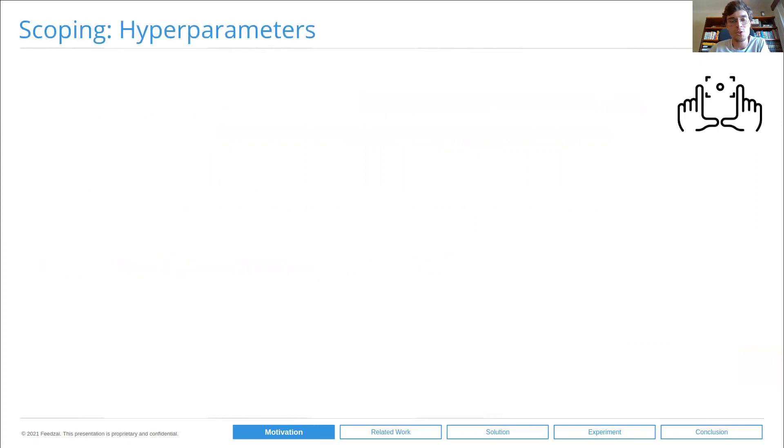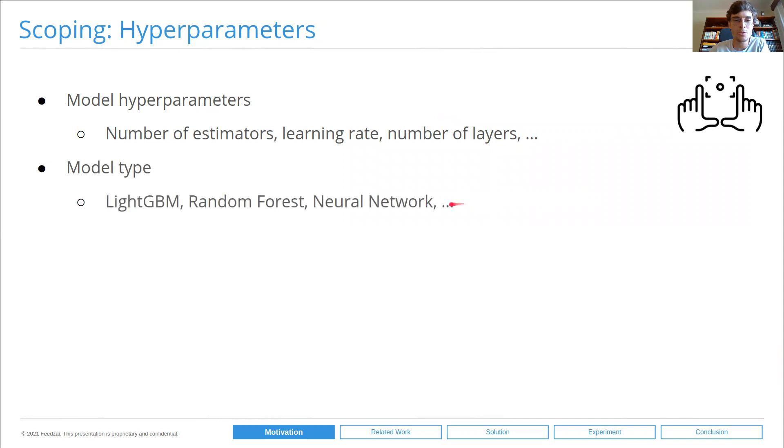Let's take a short intermission to scope out our project by defining what hyperparameters actually are. When we talk about hyperparameters, we often think about model hyperparameters. These are the number of estimators in a random forest or the learning rate and number of layers in a neural network, among others. But actually, the model type itself is also a hyperparameter. Whether we want to use a random forest or a neural network like GBM or any other model type, this is a categorical hyperparameter.